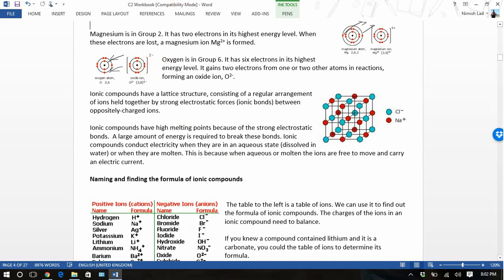These ionic compounds have something called a lattice structure. That means they have this regular arrangement of ions held together by strong ionic forces. They have strong electrostatic forces. They have a high melting point because of these strong forces. A large amount of energy is required to break these bonds. They can conduct electricity because they have ions, but they have to be in an aqueous state, dissolved in water, or they need to be molten. This is because this will allow the ions to be free to move.